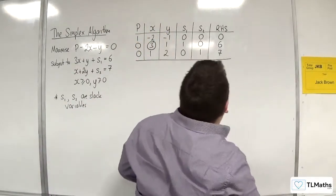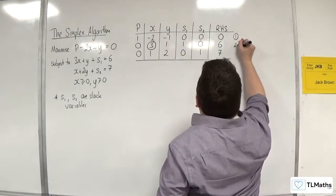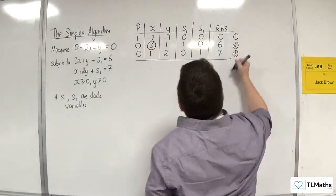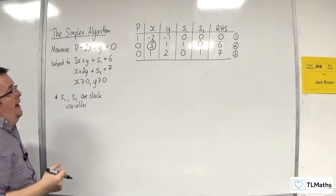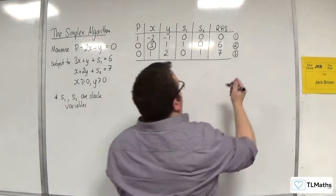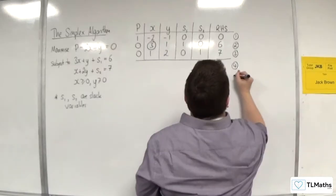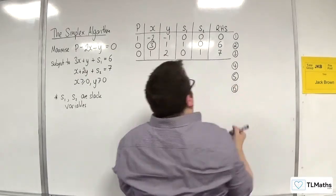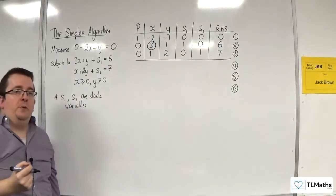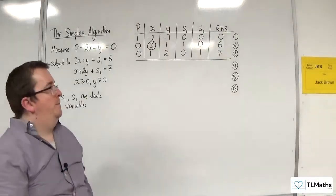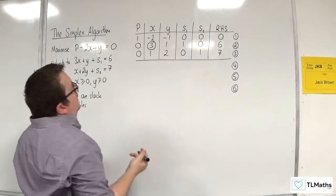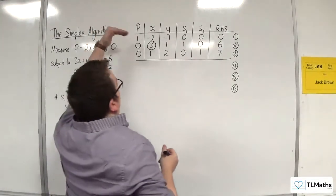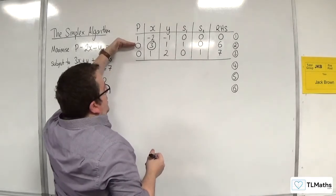So I'm going to call that equation 1, 2, and 3. And I want to form equation 4, 5, and 6. So this is going to be what I refer to as the first iteration.